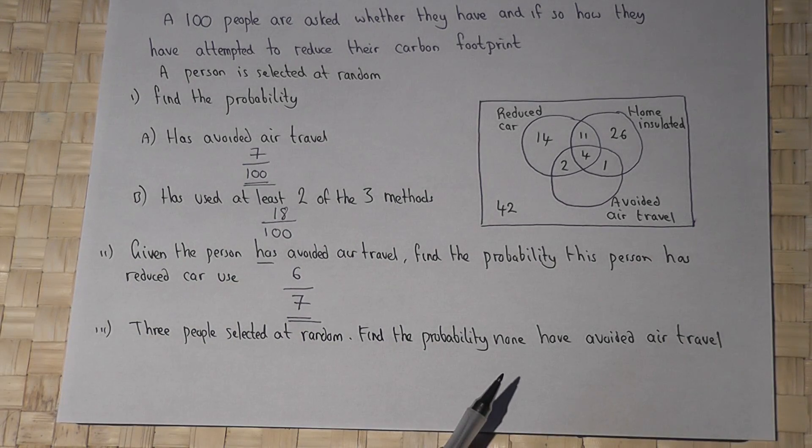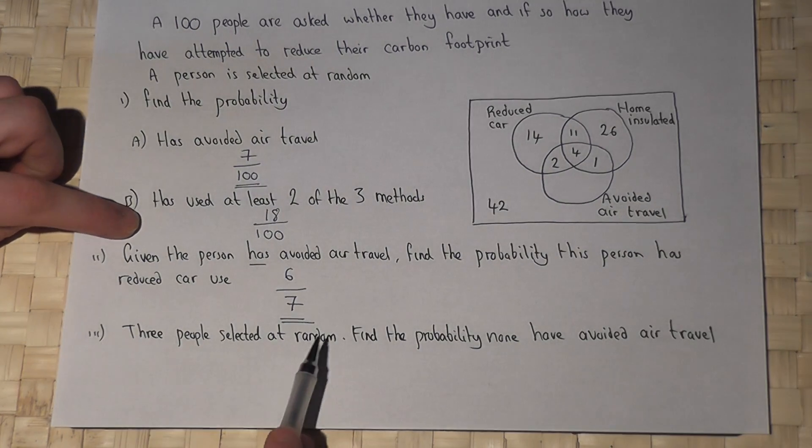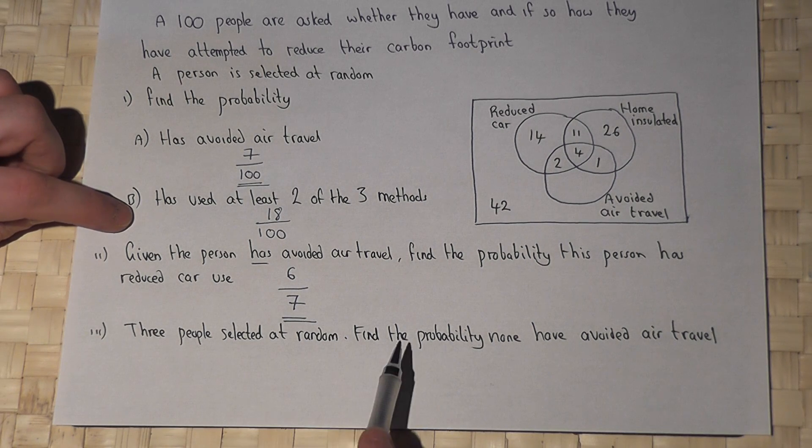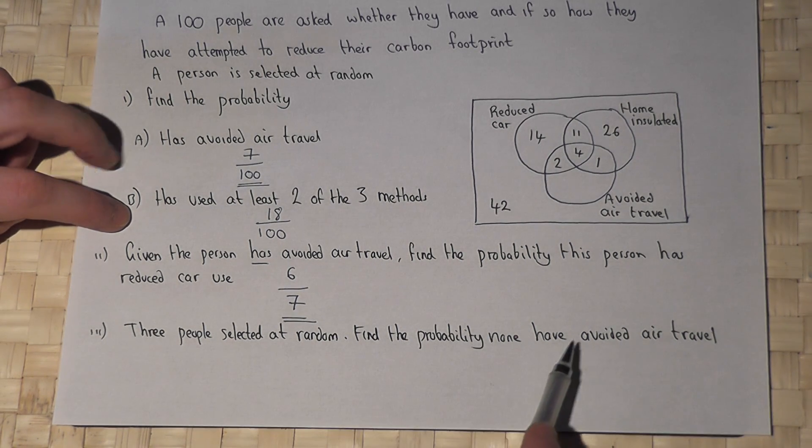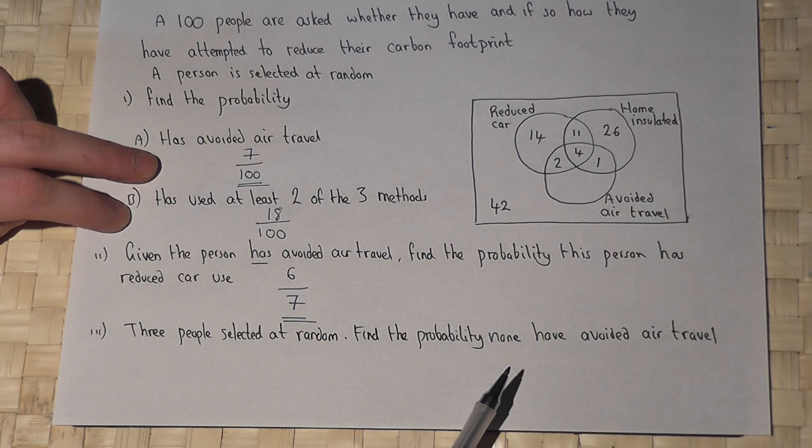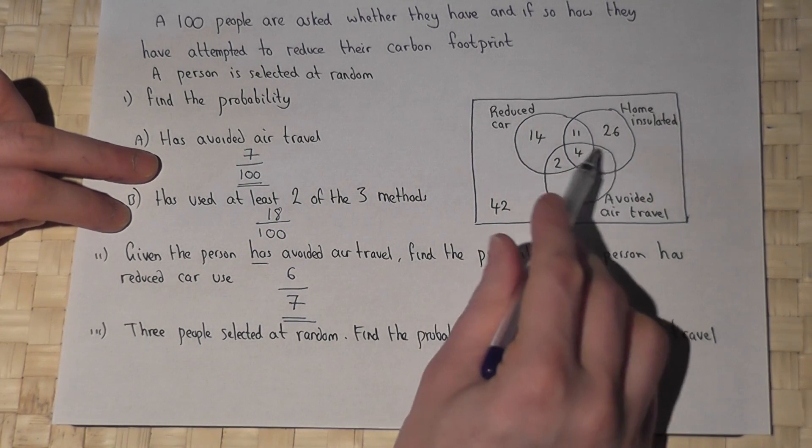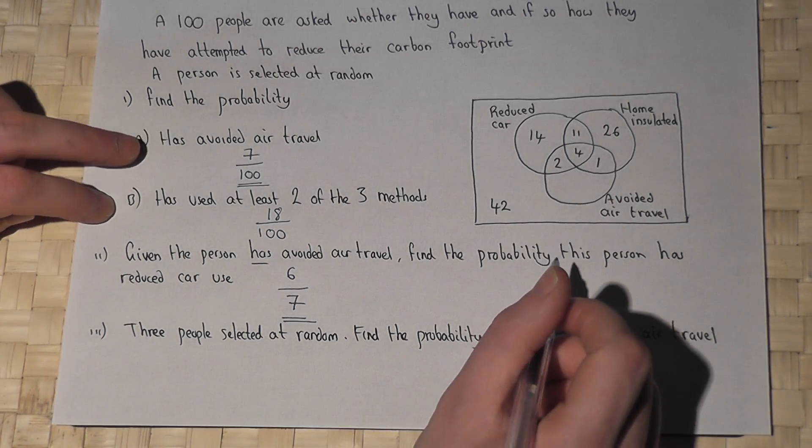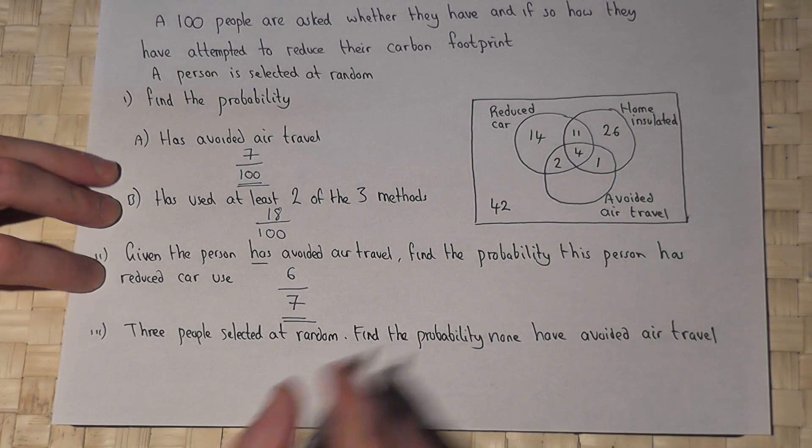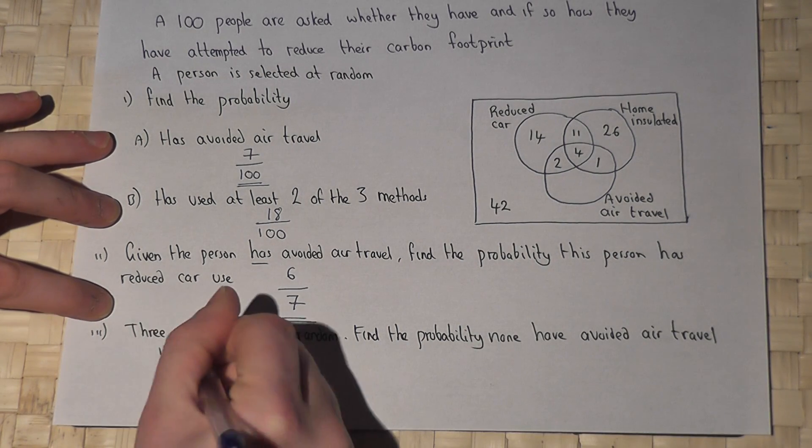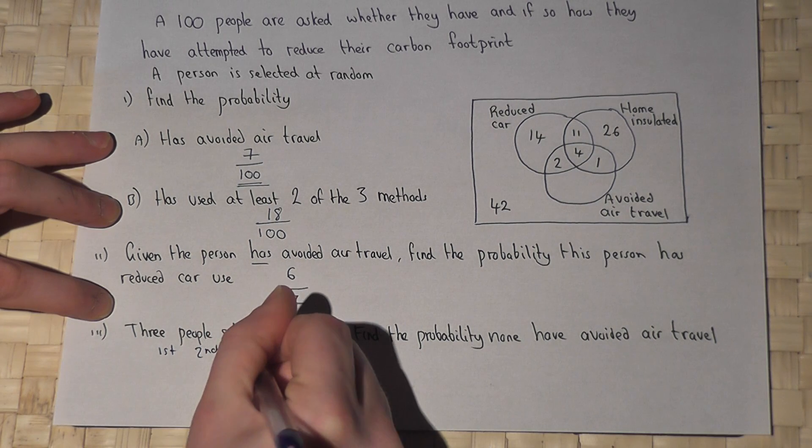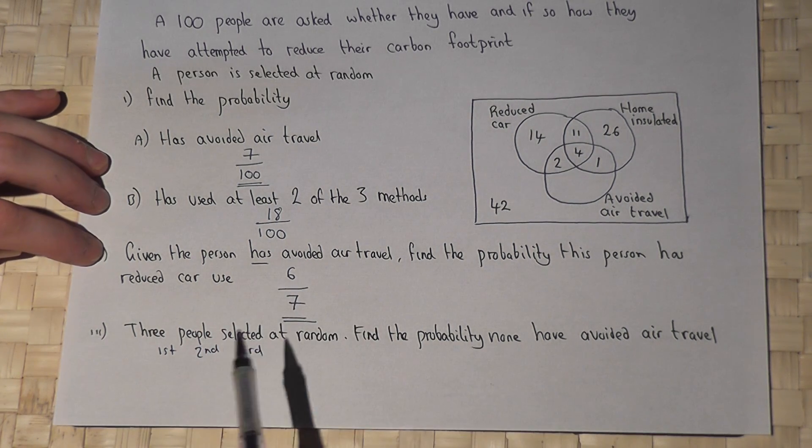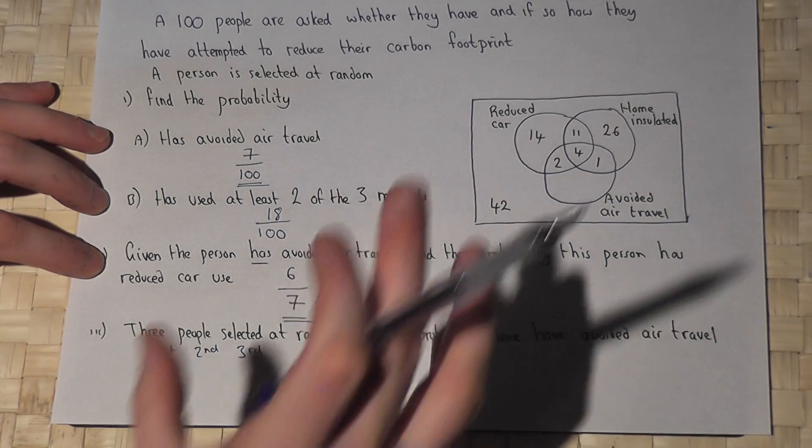The final part says three people are selected at random. What's the chance that none of them have avoided air travel? We know that seven people have avoided air travel, and we want three people: the first person, the second person, and the third person.